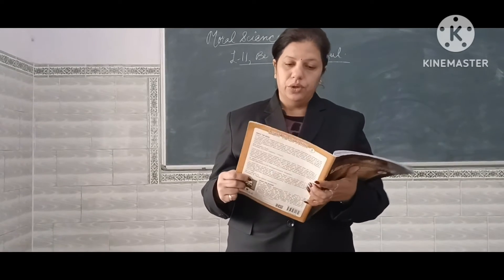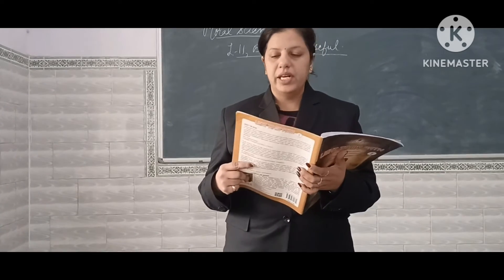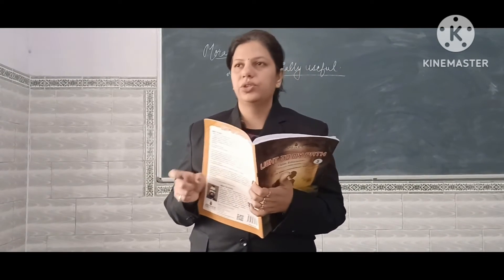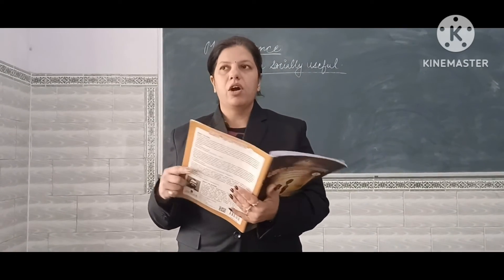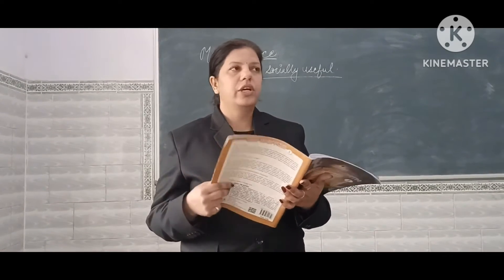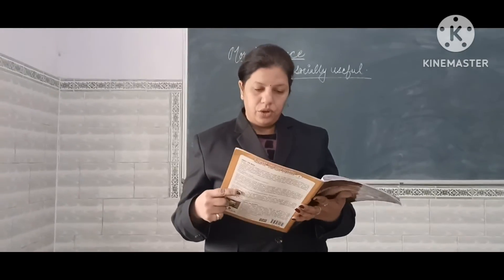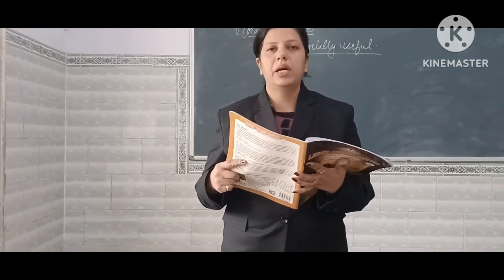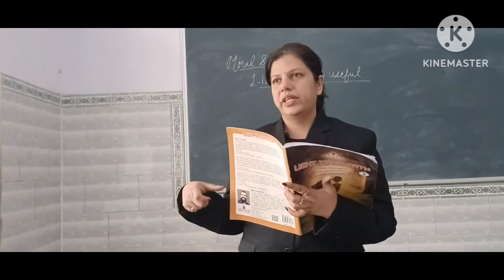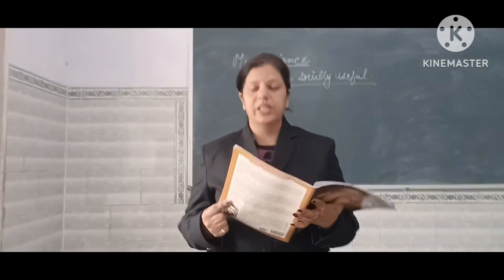Our learnings from this chapter: First, do good even when no one is observing you — we should not think that only if someone is looking at us should we do good. Second, do good even when there is no apparent reward for it — without any expectations, we should do good. Third, do good even if it consumes your time — we should not think about the time it takes to do a good act.